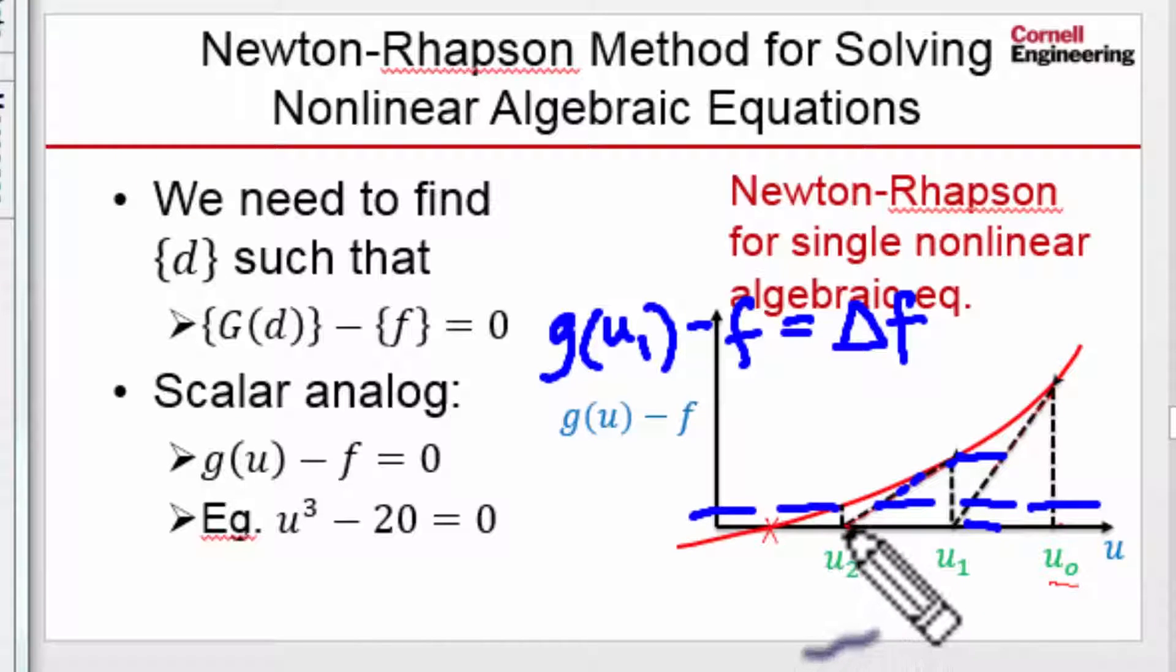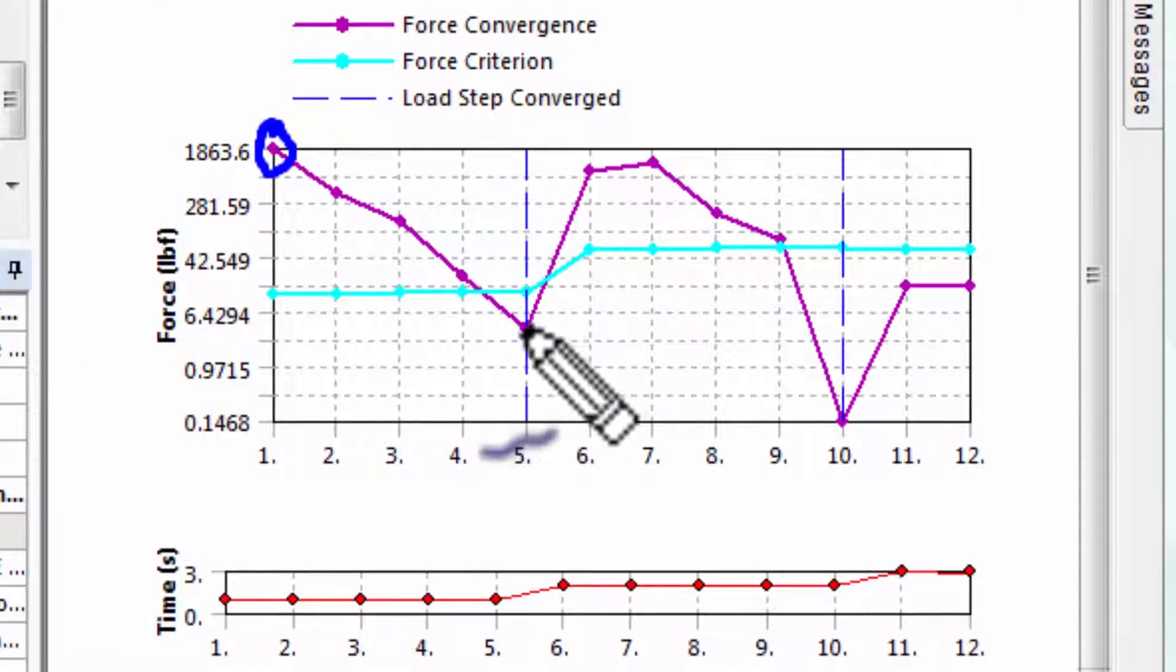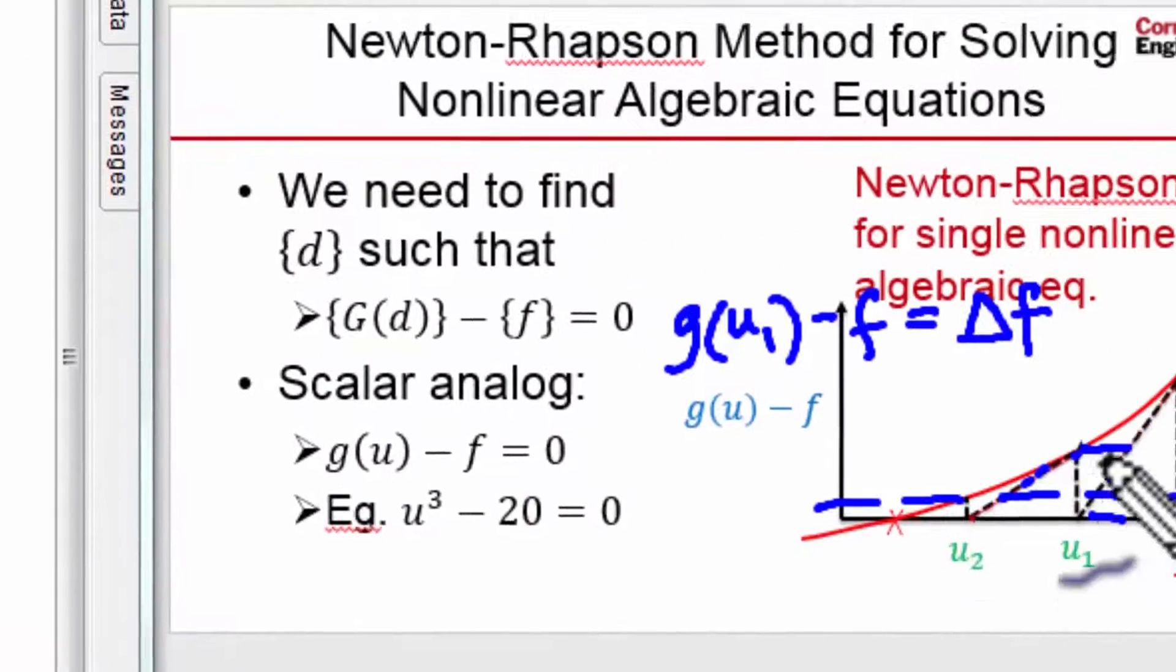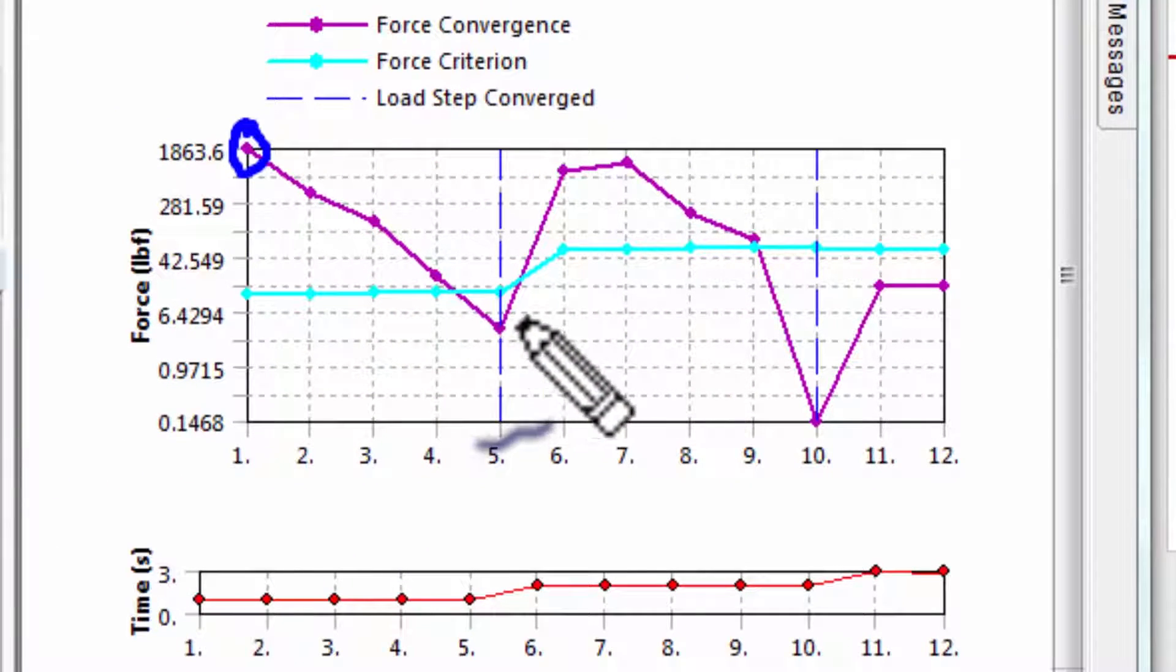In this case, the new value gives you a Delta F below the tolerance, but here that's not the case. It has to do that five times, five iterations. It's doing the Newton-Raphson five times, and the imbalance has fallen below the tolerance.